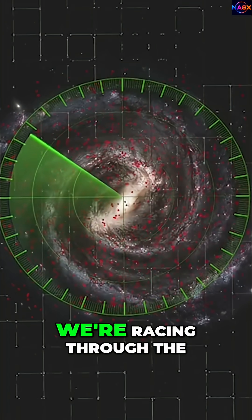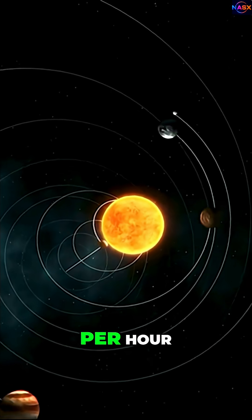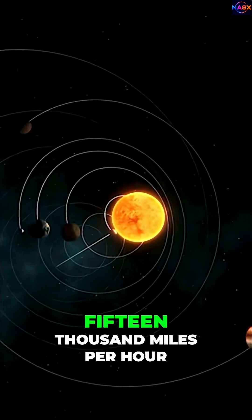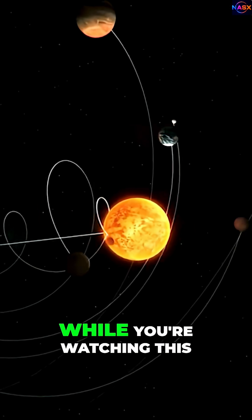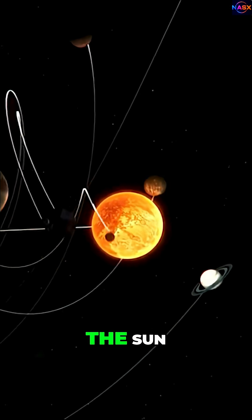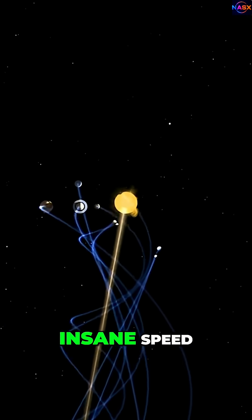Physicists just uncovered that we're racing through the universe at 828,000 kilometers per hour, that's 515,000 miles per hour. Let that sink in. While you're watching this, Earth, the Sun, the planets, everything, is moving at an insane speed.